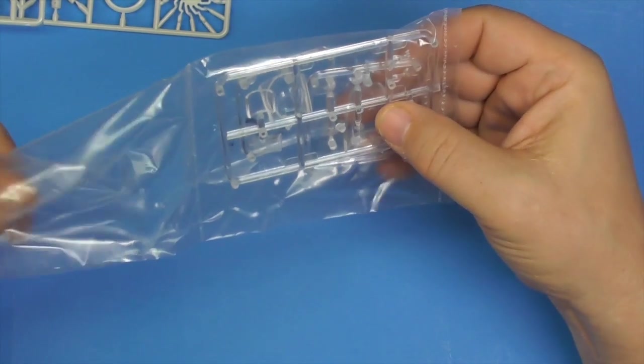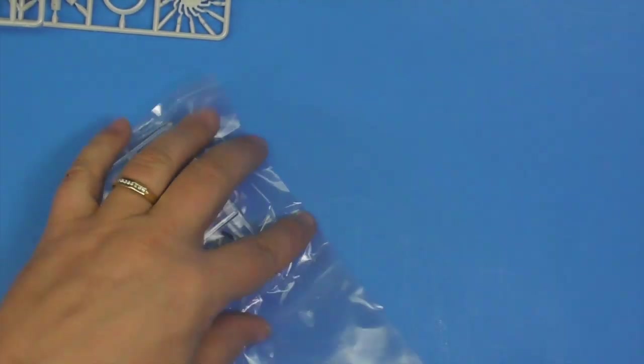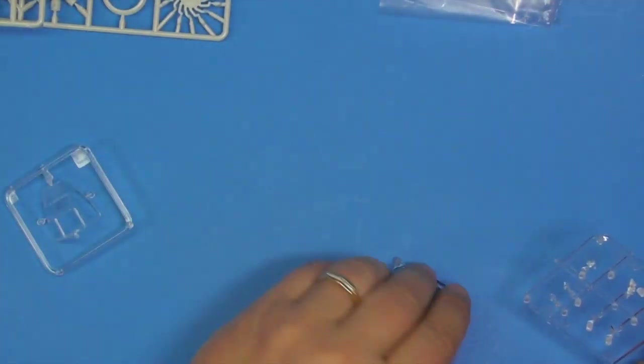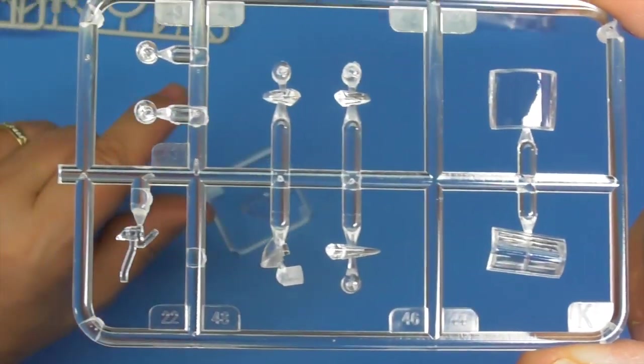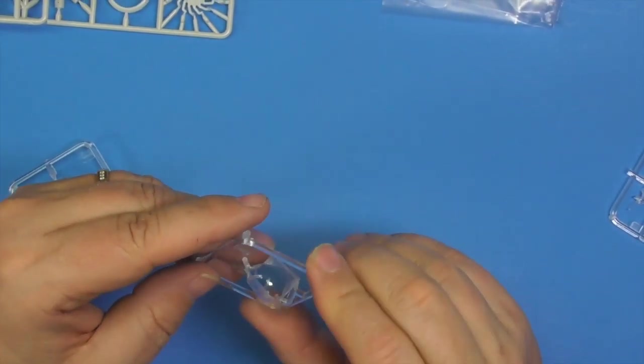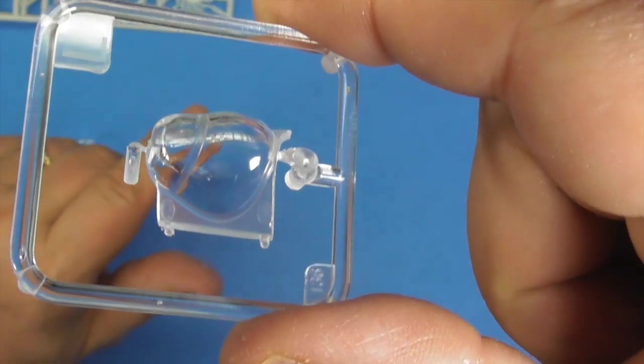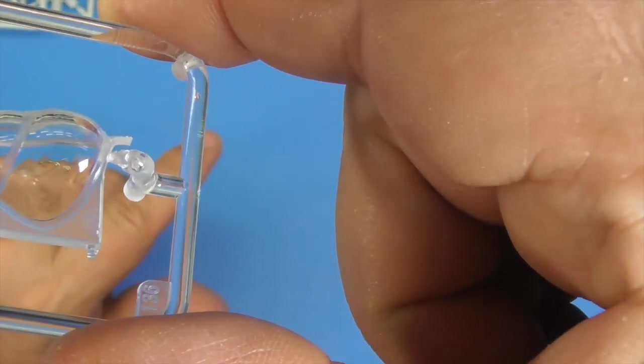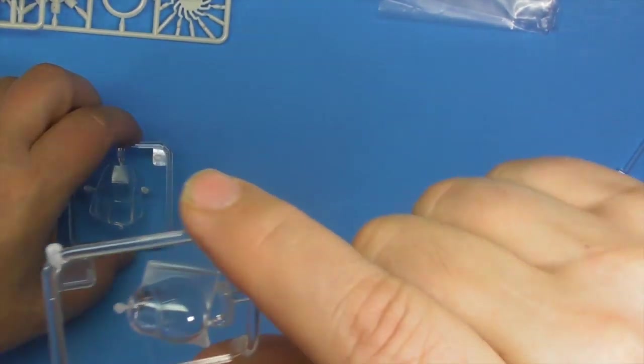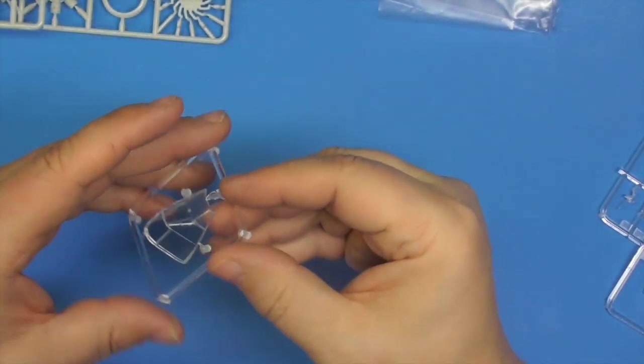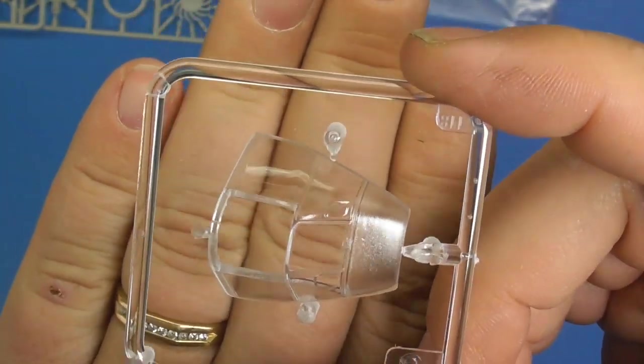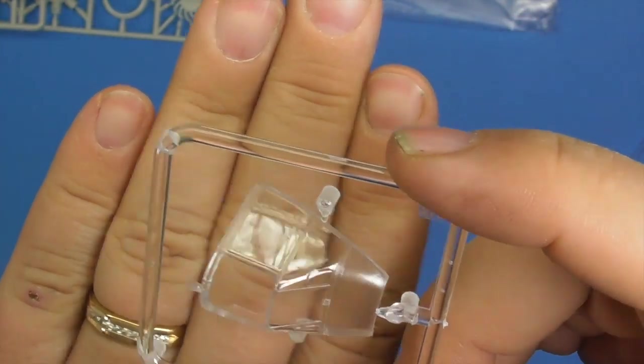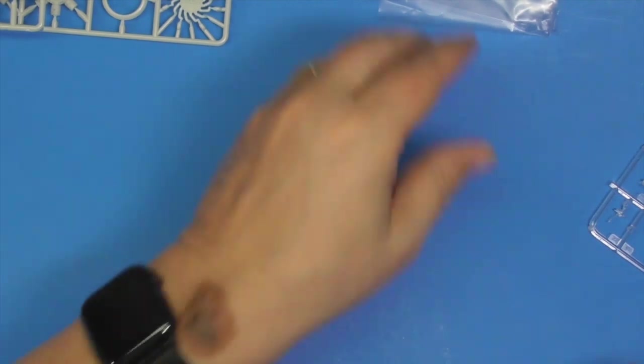Clear parts. Three sprues of clear parts that have been rubbing against each other. These are for all your tiny windows and lights, things like that. This, thinking is for the upper gun. And then this, the main canopy, and it does look really good. See a little bit of distortion but nothing too awful. So why it's in the same bag to get scratched up by everything else, I do not know.